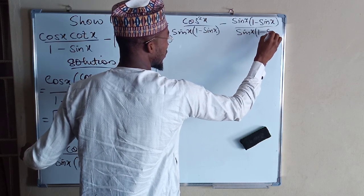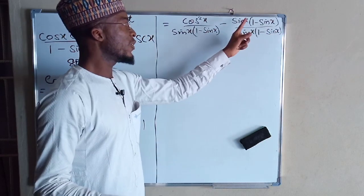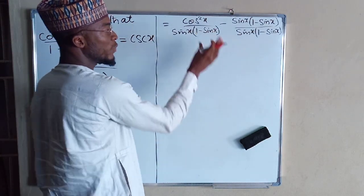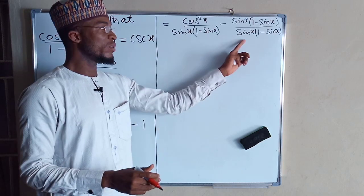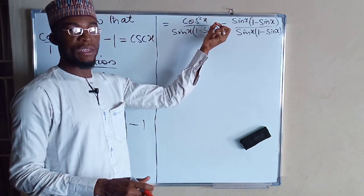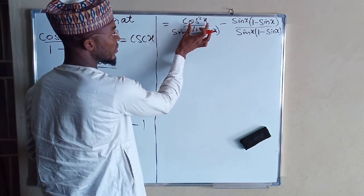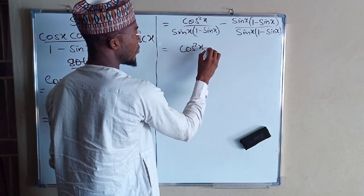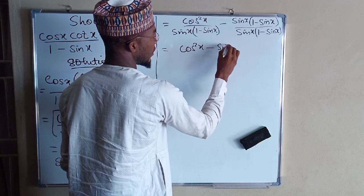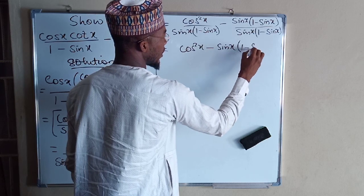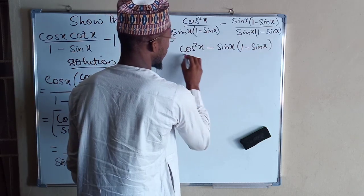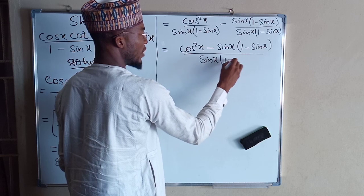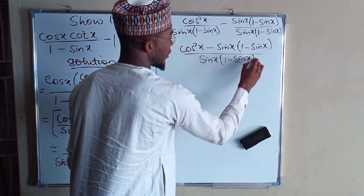Since both fractions share the same denominator sin(x)(1 - sin(x)), we can combine the numerators. We get cos²(x) minus sin(x)(1 - sin(x)), all divided by sin(x)(1 - sin(x)). Now we expand the numerator by multiplying out the bracket.